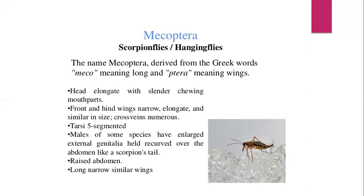The majority of Mecoptera inhabit moist environments in tropical locations. They are closely related to Siphonaptera. They have a fly-like appearance, being small to medium-sized insects with long slender bodies and narrow membranous wings. They feed mostly on vegetable matter. Non-feeding pupae may pass through diapause until weather conditions are favorable. They vary in length from 2 to 35 millimeters. About 600 extant species are known and they are cosmopolitan in distribution.